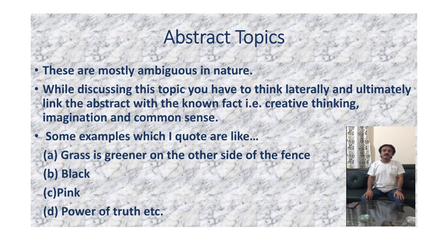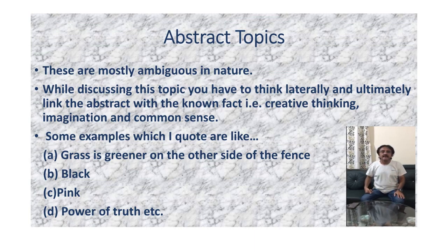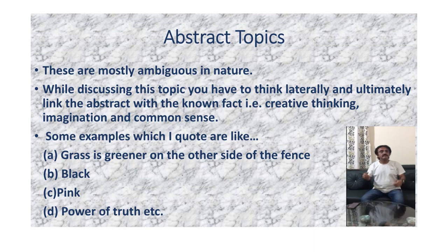The third type is abstract GD topics, which are mostly ambiguous in nature. While discussing, you have to think laterally and ultimately link the abstract with a known fact — that is creative thinking, imagination and common sense. Examples include: grass is greener on the other side of the fence, black, pink, power of truth, honesty, etc.